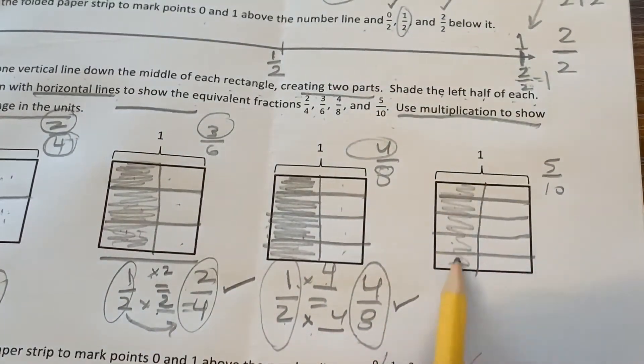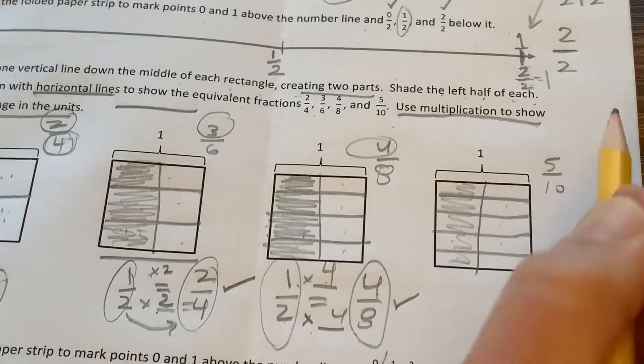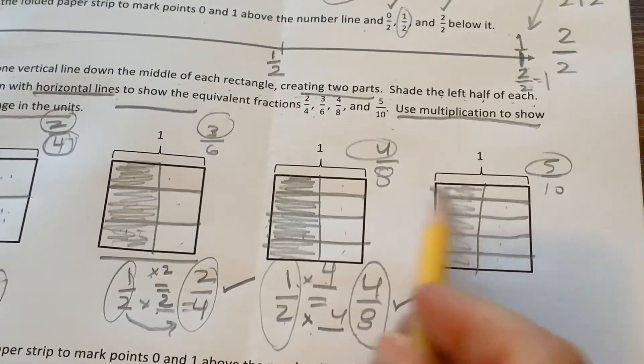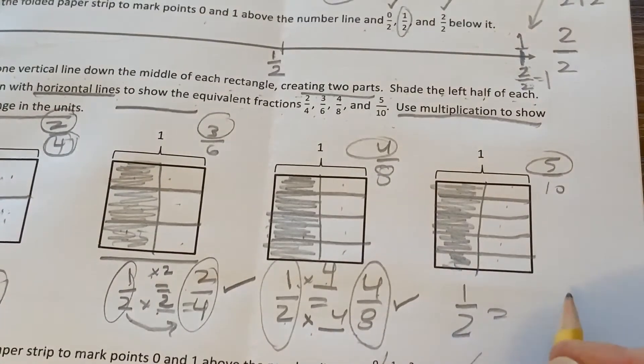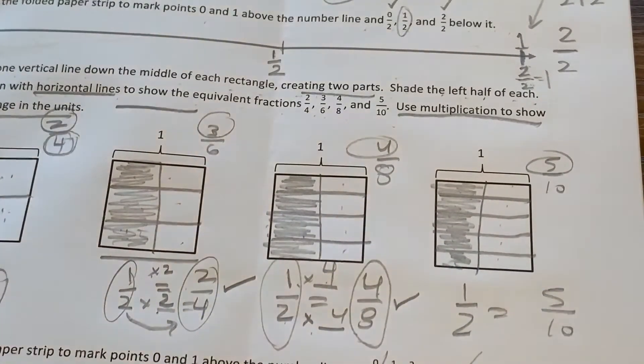There should be ten boxes. One, two, three, four, five, six, seven, eight, nine, ten. Yep. Shade in five of them. Oh, look, it's what I already did. One half equals five tenths.